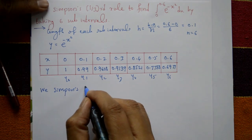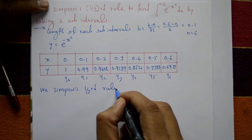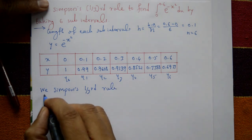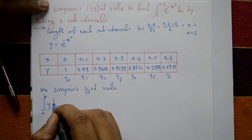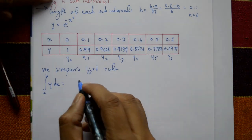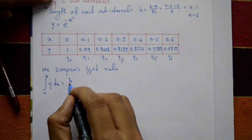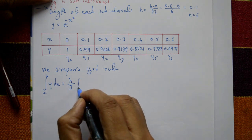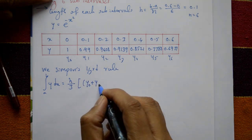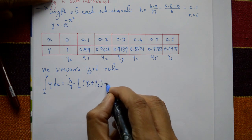Now we have Simpson's 1/3rd rule. The 1/3rd rule is: integration from a to b of y dx is equal to h/3 times the sum. 1/3rd rule means h by 3, so initial value plus final value (y6).